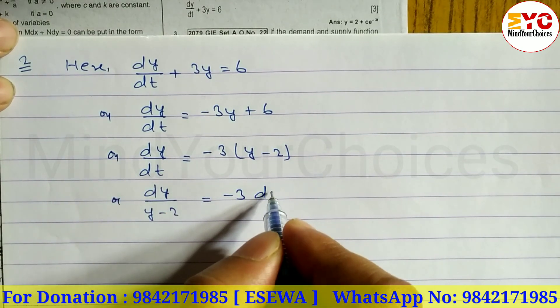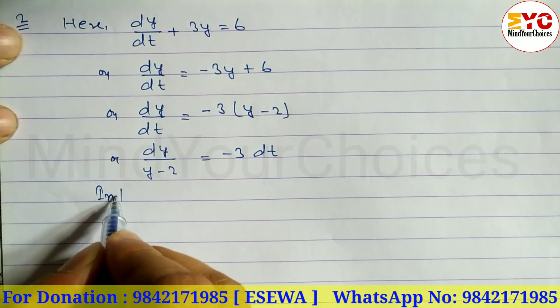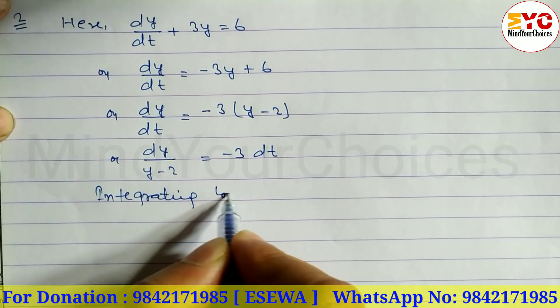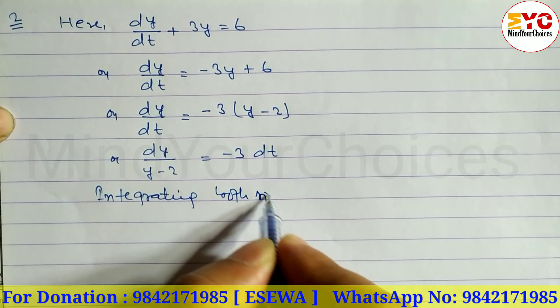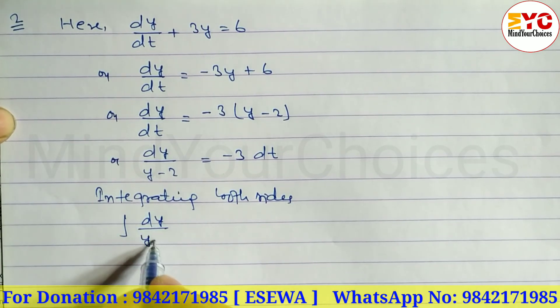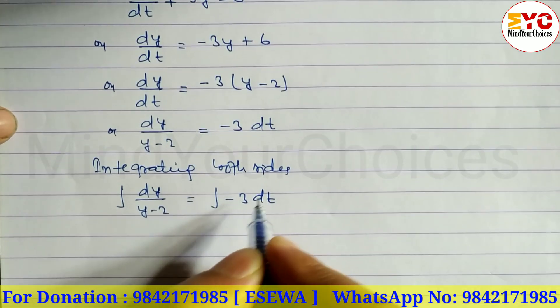After that we have to integrate both sides. Integrating both sides: integration of dy/(y-2) equals integration of minus 3 dt.